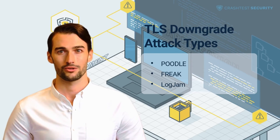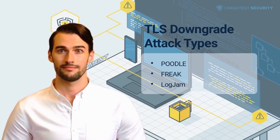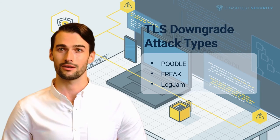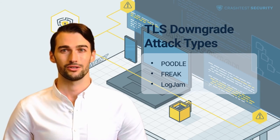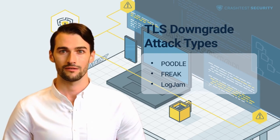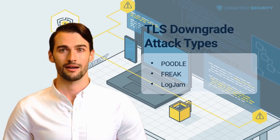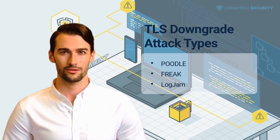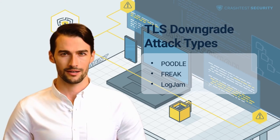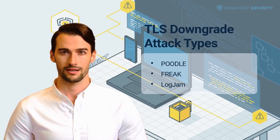LOGJAM: The LOGJAM vulnerability operates similarly to FREAK. This attack is launched against servers that use TLS with a Diffie-Hellman key exchange. Using a man-in-the-middle approach, attackers force the server's TLS protocol to downgrade to using a 512-bit Diffie-Hellman export-grade key exchange algorithm. After causing the downgrade, an attacker can proceed with cracking the encryption parameters and thereby gain access and control over the connection.